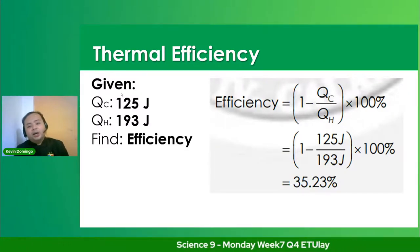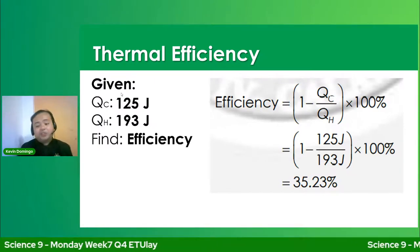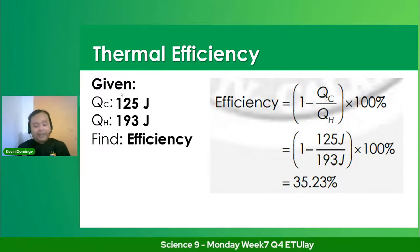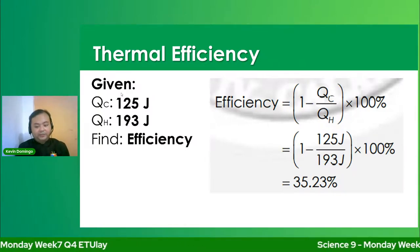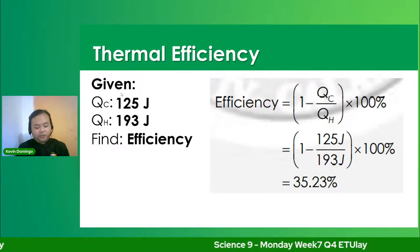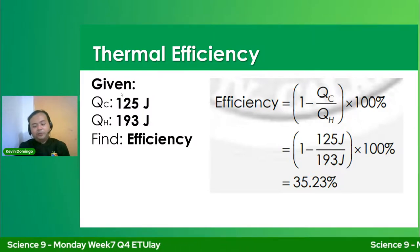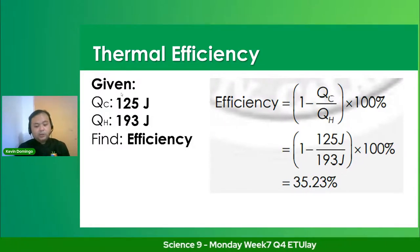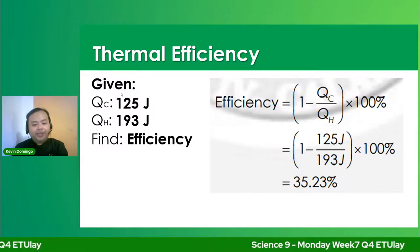Computing: 1 minus the quotient of 125 joules and 193 joules, then multiplied by 100. The answer is 35.23%. That is the efficiency of the gasoline engine.